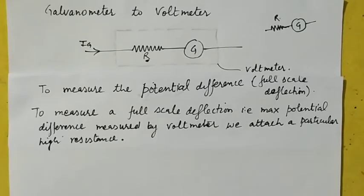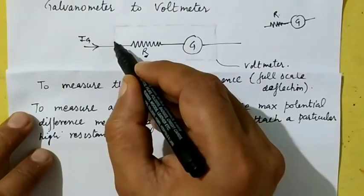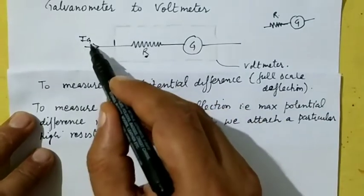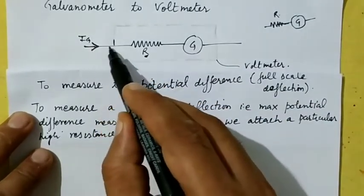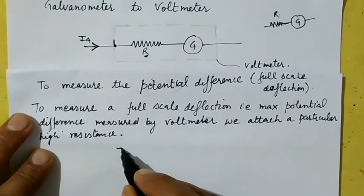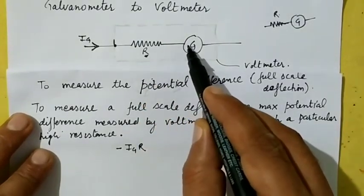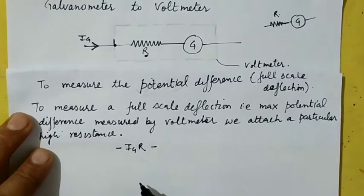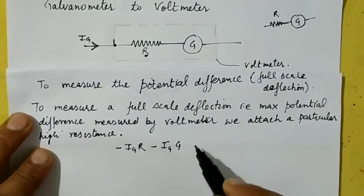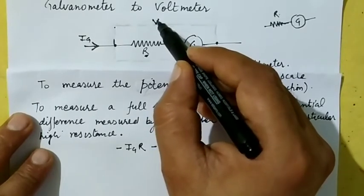Now, to measure a full scale deflection — that is, the maximum value of potential difference measured by a voltmeter — we attach a particular resistance with this galvanometer. I will apply the potential difference rule. Starting from zero, the maximum current which can be passed through this galvanometer is IG. As it moves through the resistance R, there is a potential drop of IG × R, and then moving across the galvanometer there is a further potential drop of IG × G.